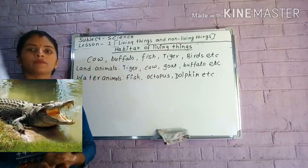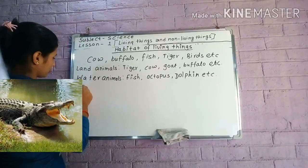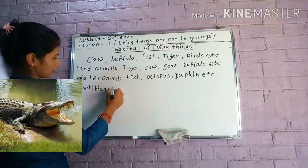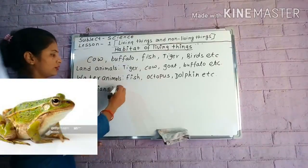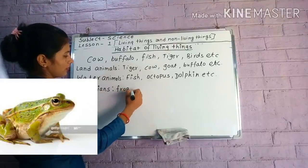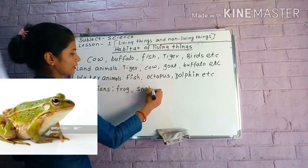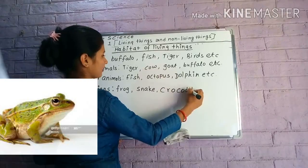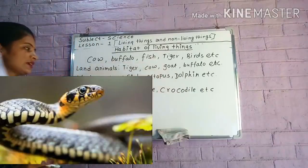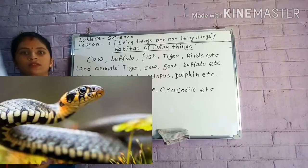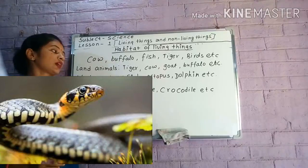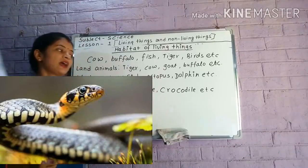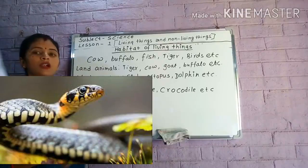Similarly, another category of animals is amphibians. Amphibians are animals such as frog, snake, crocodile, etc. These animals live both on land and in water, so these animals are called amphibians.